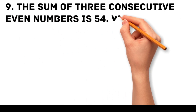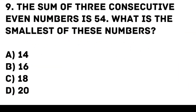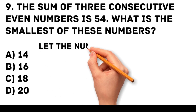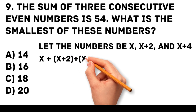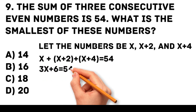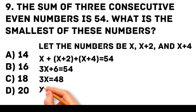Question 9. The sum of 3 consecutive even numbers is 54. What is the smallest of these numbers? A. 14. B. 16. C. 18. D. 20. Answer: B. 16. Let the numbers be x, x plus 2, and x plus 4. So x plus (x plus 2) plus (x plus 4) equals 54. 3x plus 6 is equal to 54. 3x equals 48. x equals 16.